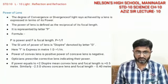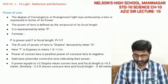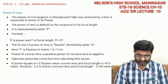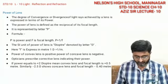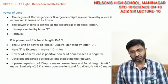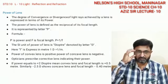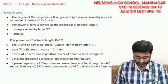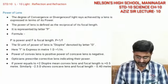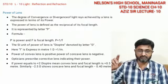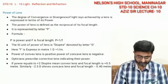Opticians prescribe the correction according to the power. For example, if power equals plus 2 dioptre, it is obviously a convex lens, and 1 divided by 2 gives 0.5 meters focal length. The person can say they wear a lens of power 2 dioptre — plus means it is a convex lens, that is a nearby object problem. If it is minus 2.5 dioptre, the answer comes as 1 divided by 2.5 which is 0.4 meters — that means the person cannot see beyond a focal length of 0.4 meters.